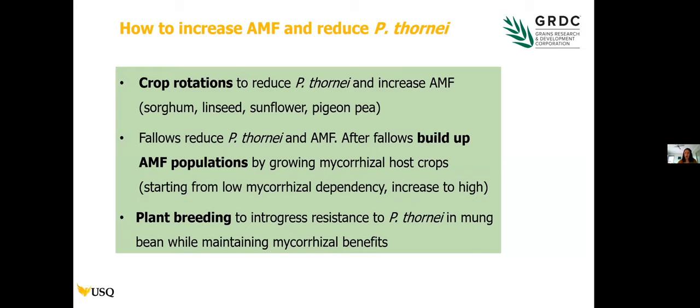Up here, fallows play a big role in crop rotations and do reduce the population density of Pradylenchus thornei. However, AMF is an obligate biotroph — it needs a living plant host to survive — so after fallows of six to 18 months, AMF population densities can be very low. To build up those populations, you can grow mycorrhizal host crops with low mycorrhizal dependency, like wheat or barley, which still produce spores in the soil for subsequent high-dependency crops like mungbean.